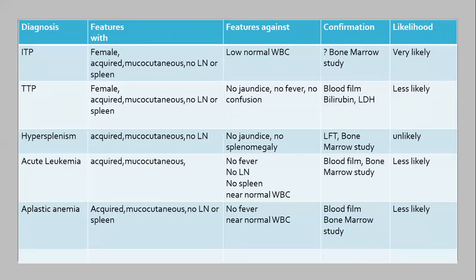For ITP, immune thrombocytopenia, the supporting features in this patient include: she is female, there is an acquired bleeding tendency, it is mucocutaneous — an important feature of thrombocytopenia — and there is no lymphadenopathy or splenomegaly, all expected in ITP. A feature that does not fit perfectly is the low-normal white blood cell count, but this does not exclude ITP. To confirm the diagnosis, a bone marrow study may be needed.